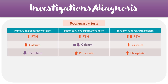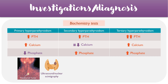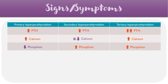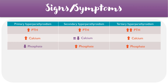In terms of diagnosis for hyperparathyroidism, the first step is usually biochemistry tests measuring levels of PTH, calcium, and phosphate to determine which type is present. In some instances, patients can also undergo ultrasound or nuclear scintigraphy to identify regions where parathyroid activity is increased. DEXA scans can also help to confirm the diagnosis.